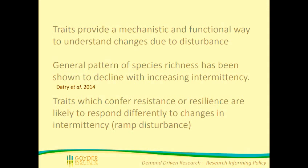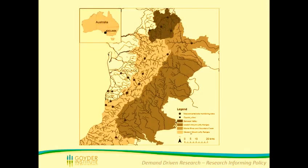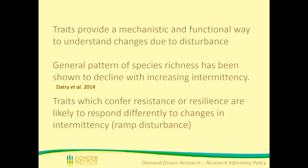Traits provide a mechanistic and functional way to understand changes to disturbance. General patterns of species richness have been shown to decline with increasing intermittency, and this has been found worldwide — a study from three different continents has shown that to be a general trend. Traits which convey resistance or resilience are likely to respond differently to changes in intermittency, which we define as a ramp disturbance — meaning something that increases in severity over time. Resistance is a species' ability to resist perturbation, whereas resilience is its ability to bounce back once that perturbation has subsided.